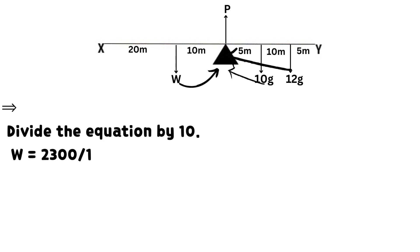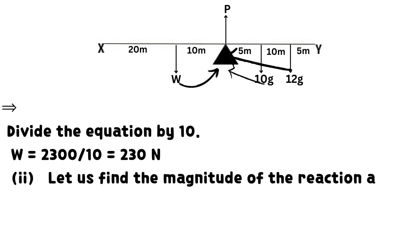Divide the equation by 10 and we have that the weight of the non-uniform beam W equals 2300 divided by 10, which equals 230 newtons.